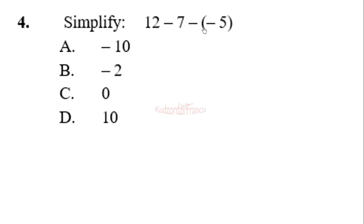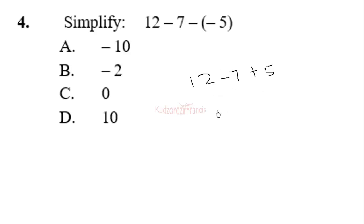Simplify 12 minus 7 minus negative 5. Let's deal with the bracket first. Negative negative becomes positive. The next thing we have to do is addition and subtraction. Let's subtract: 12 minus 7 will give you 5, then plus 5, and that will give you 10. So the correct answer is 10.